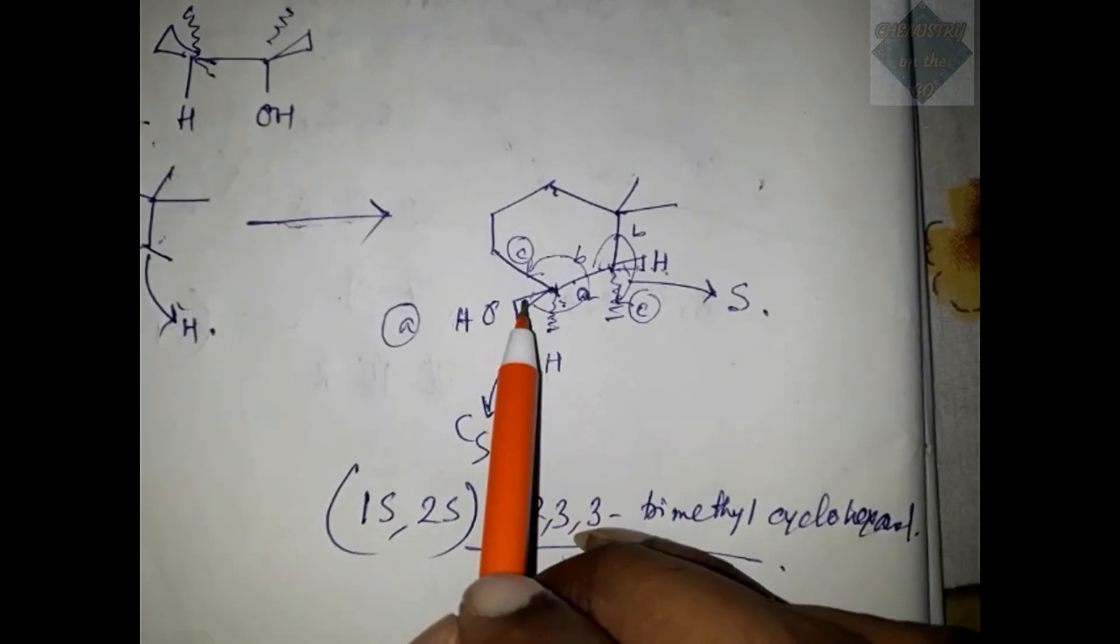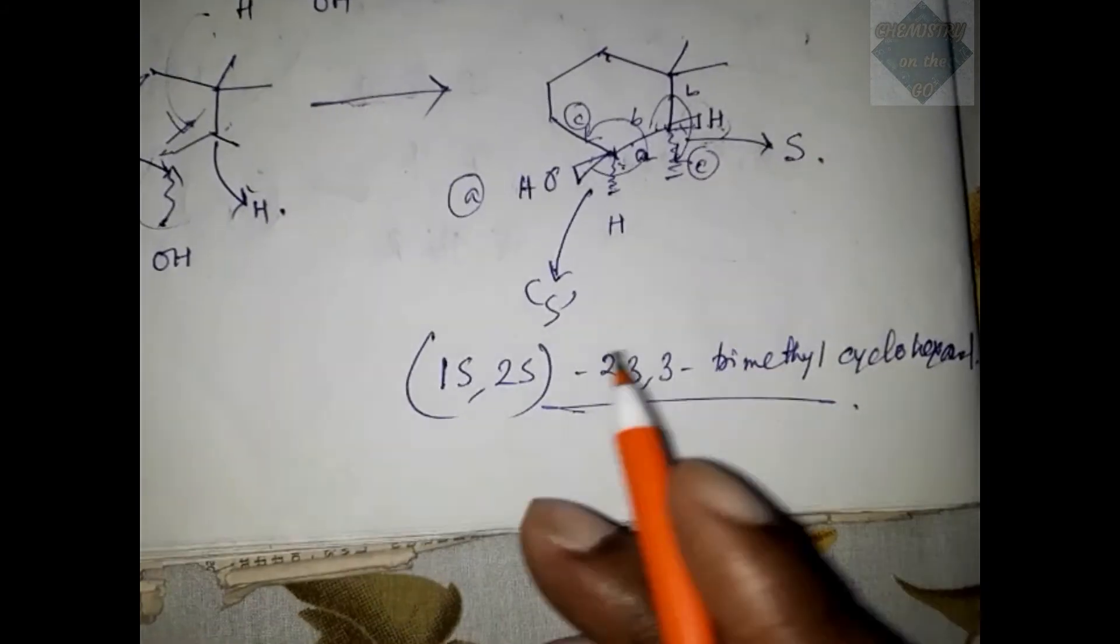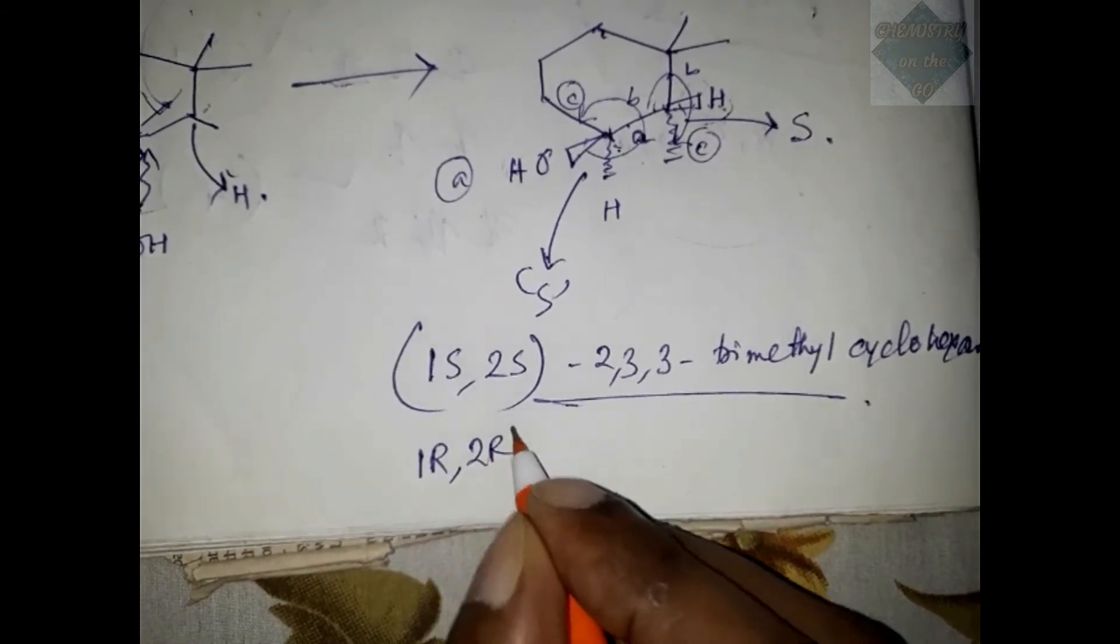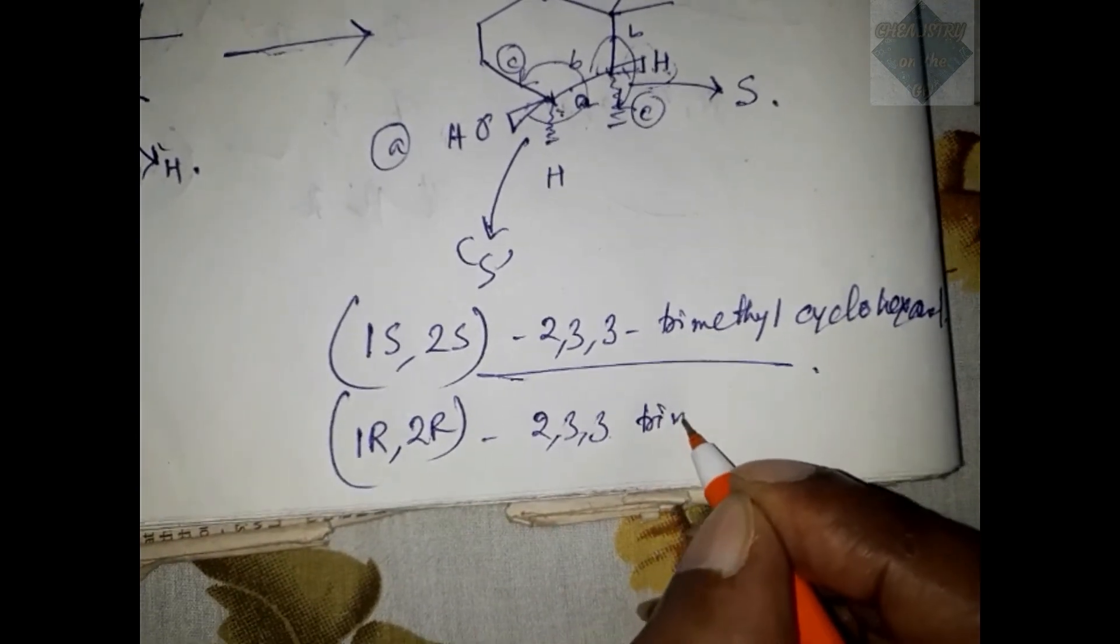But what if the OH and H are added from below the plane? We will get (1R, 2R)-2,3,3-trimethylcyclohexanol.